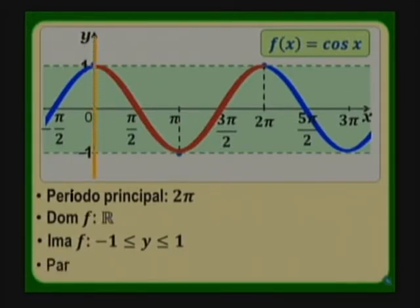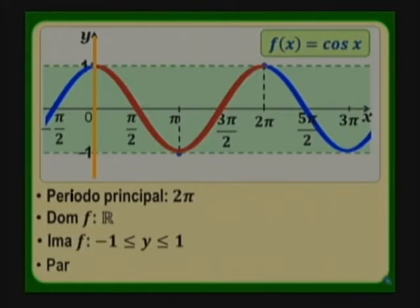La función coseno es una función par: es simétrica respecto al eje de las y, como si el eje de las y fuera un espejo. Lo mismo que tenemos a la derecha lo tendremos a la izquierda. Esto se expresa como: f(x) es igual a f(−x), es decir, el coseno de un ángulo es igual al coseno de su ángulo opuesto.